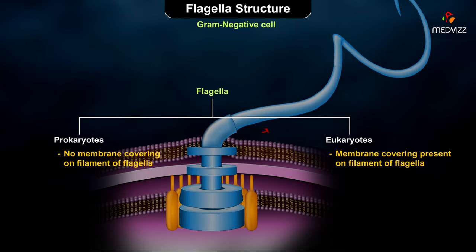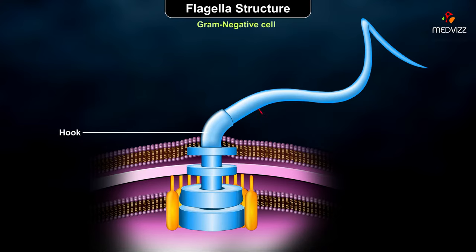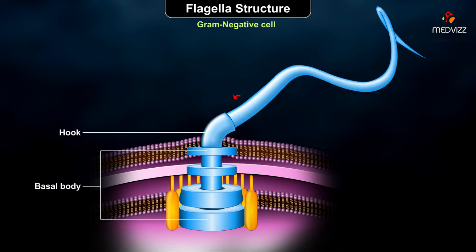The whip-like filament inserts into a curved structure called a hook. The hook is composed of a different protein and connects the filament to the basal body.